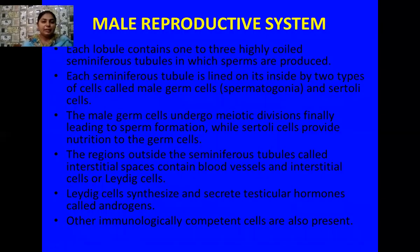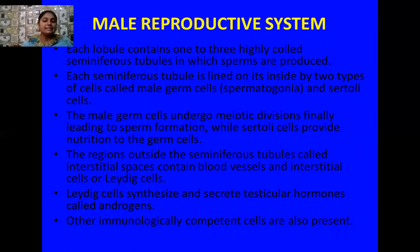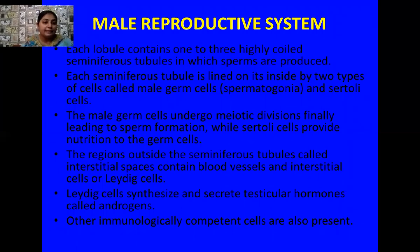Inside each testis there are 250 testicular lobules, and each lobule contains one to three highly coiled seminiferous tubules. These seminiferous tubules are the site where sperm formation takes place. Each seminiferous tubule is lined on its inside by two types of cells: the male germ cells, also called spermatogonia, and the Sertoli cells. The male germ cells are the mother cells of sperms — they undergo meiotic divisions and finally form sperms. The Sertoli cells provide nourishment or nutrition to the germ cells or developing sperm.